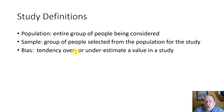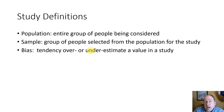Bias is a tendency to over- or underestimate a value in a study, and it's almost always there. One of the jobs of statistics is to make bias as small as possible so we can have as good a result for our study as possible.